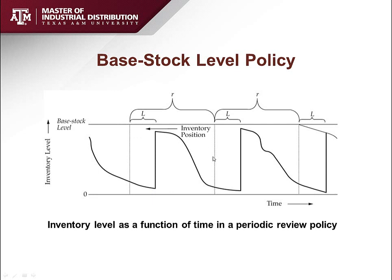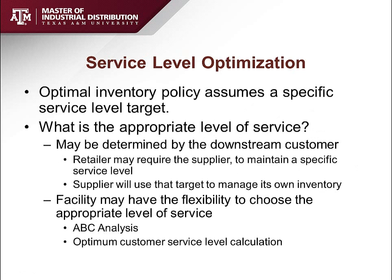The s,S policy is very similar to the Q,R policy. Calculate R and Q as if you are not using a periodic review policy, then set the small s equal to R and the capital S equal to R plus Q. At each review interval, check inventory and based on the gap between the maximum base stock level and the current inventory position, place an order. After a lead time, that order arrives, you keep selling, and when the next review interval comes you place another order.